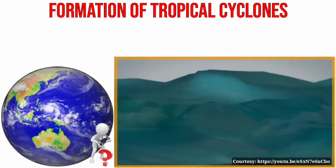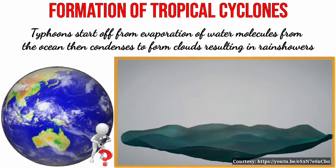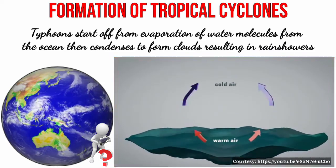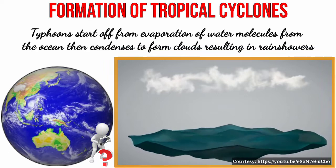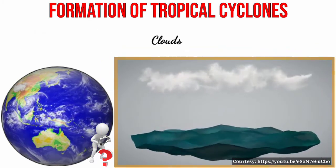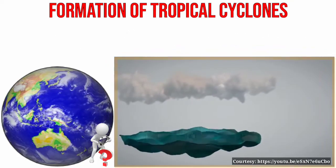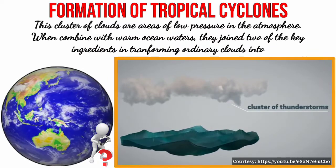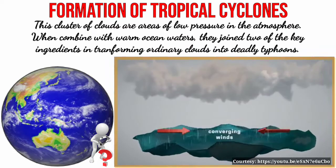Typhoons form just like how ordinary wind clouds form. They start from the evaporation of water molecules from the ocean. Because this moist air is warm, it travels upwards until it meets cold air. At this point, it starts to condense and form clouds, resulting in rain showers. The clouds dissipate and vanish after precipitation is completed. With a very active system, clouds can group together into large clusters of thunderstorms, which are areas of low pressure in the atmosphere. When combined with warm ocean waters — typically over 26 degrees Celsius — these join two of the key ingredients in transforming ordinary clouds into deadly typhoons.